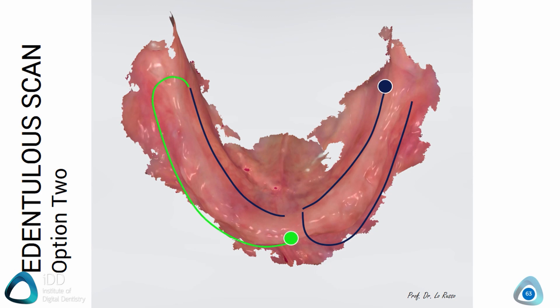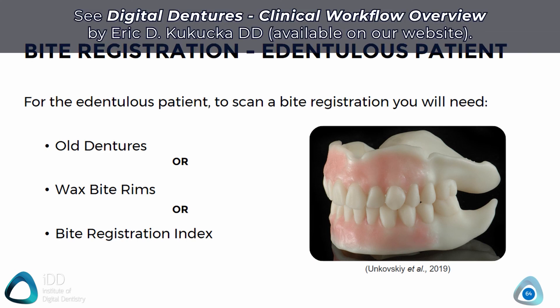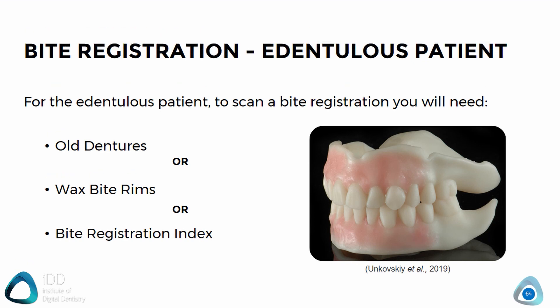Taking a bite registration for an edentulous case will require more work than a full arch case and typically requires some form of appliance — either an old denture, bite rims, or another form of bite registration index. This will be covered in detail in more advanced courses. Lastly, let's go over the quadrant scan.